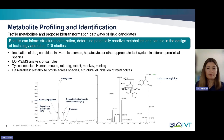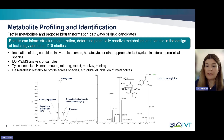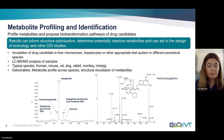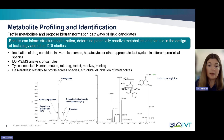Moving on to metabolite profiling and identification, colloquially often called MET-ID. This study provides metabolite profiles and proposes biotransformation pathways. Structures of the major in-vitro metabolites in different preclinical species are proposed, and the data enable you to identify human-specific metabolites or metabolites that are disproportionately high in humans. Dependent on the drug development phase of the program, the data can inform structure optimization, determine potentially reactive metabolites, and aid in the design of toxicology and other DDI studies.